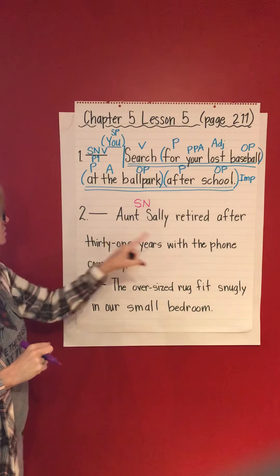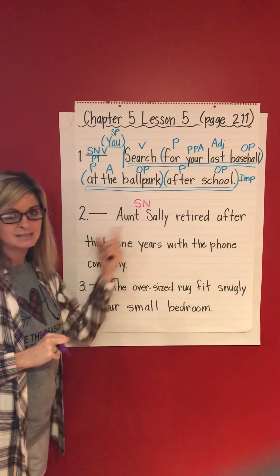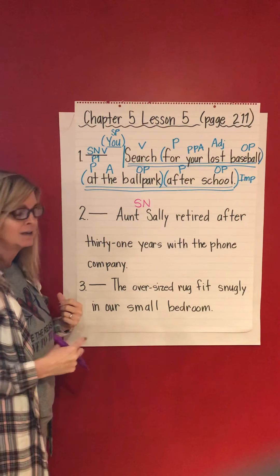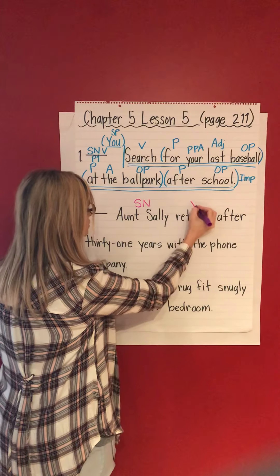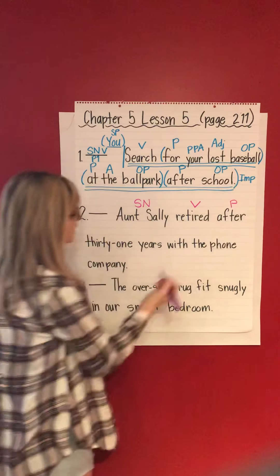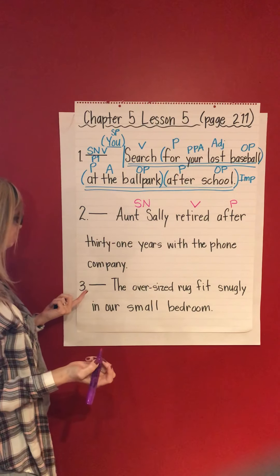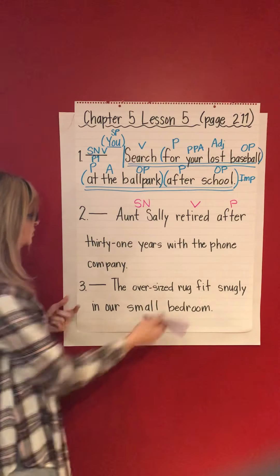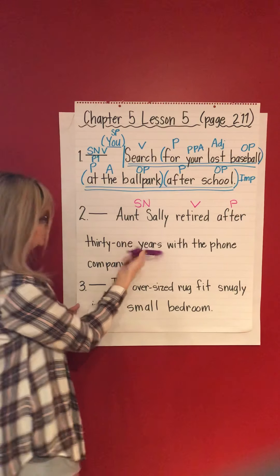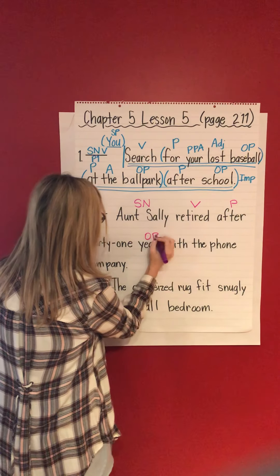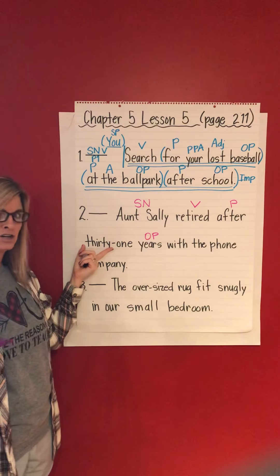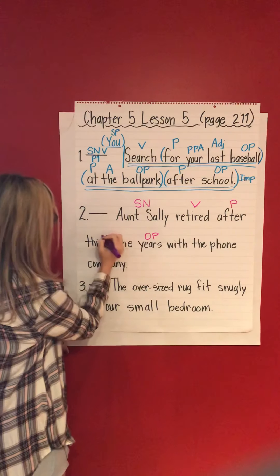Who retired after 31 years with the phone company? Aunt Sally. What is being said about Aunt Sally? Aunt Sally retired — verb. 'After' — preposition. After what? Years — object of the preposition. '31' — what question does this answer? It answers the question 'how many years?' 31 — adjective.